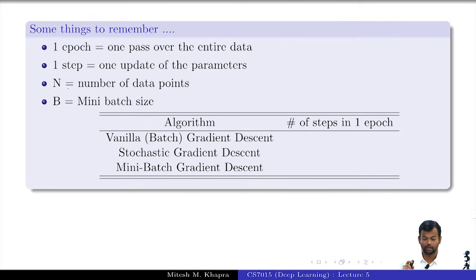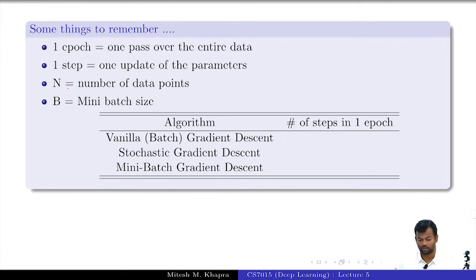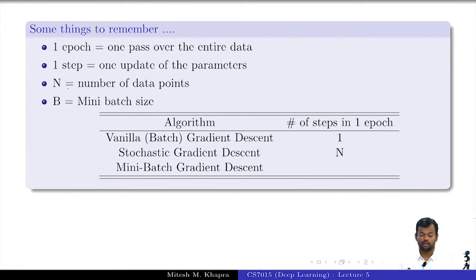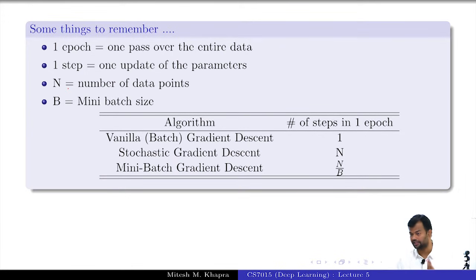Some terminology to remember: one epoch is one pass over the entire data; one step is one update to the parameters; n is the number of data points; b is the mini-batch size. In batch gradient descent, the number of steps per epoch is 1. In stochastic gradient descent it is n. In mini-batch gradient descent it is n divided by b. Get used to this — epoch, step, and batch size appear regularly in deep learning papers.